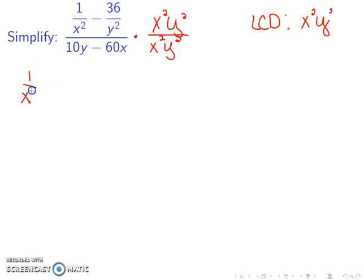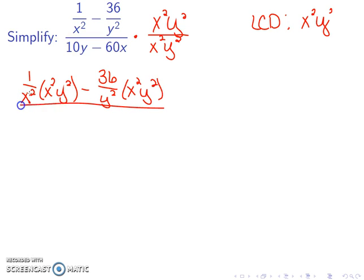This gives me 1 over x squared times x squared y squared minus 36 over y squared times x squared y squared, all over 10y minus 60x times x squared y squared.